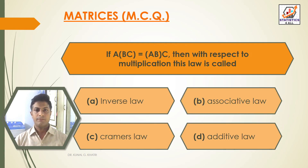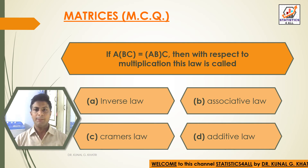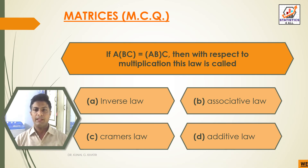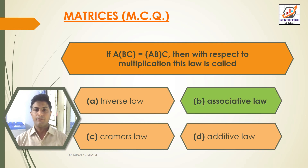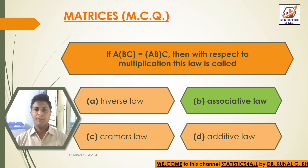Next question: if A(BC) = (AB)C, then with respect to multiplication, this law is called — option A: inverse law; option B: associative law; option C: Cramer's law; option D: additive law. The answer is option B, that is associative law. If A(BC) = (AB)C, then with respect to multiplication, this law is called the associative law.